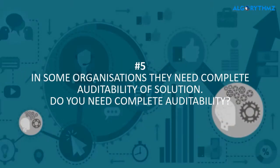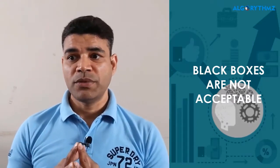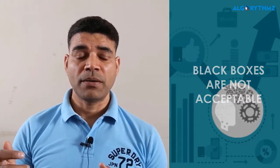Sometimes you implement a tool and halfway through you recognize it is not a good fit with the organization's vision. Question number five: do you need a complete auditability or traceable solution? Black boxes are not acceptable in some businesses — they need a full audit trail. In certain AI solutions it has to be mentioned right at the beginning that you need to trace each and every step.